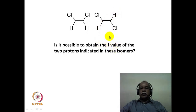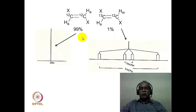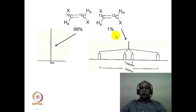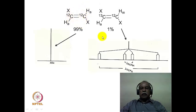In order to do that, we look into a phenomenon called carbon-13 satellite peaks. We are referring to only the proton NMR spectrum of the compound. When we take the trans dichloro derivative, the actual sample contains mostly 99% carbon-12 molecules, and carbon-12 is magnetically inactive so it does not matter for the NMR experiment. These two hydrogens are chemically and magnetically identical in the carbon-12 isotopomer. However, remember that the natural abundance of carbon-13 is about 1 percent.